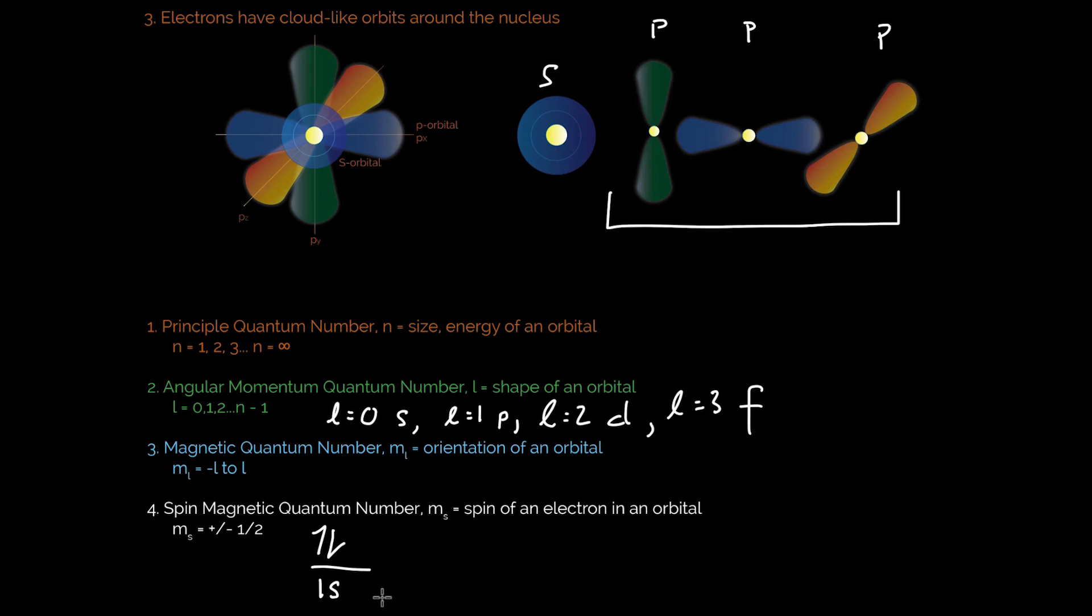And this quantum number, there's no way to really determine what it is without doing some heavy-duty math or some observation. So all you really need to know is that the possible values for m sub s are going to be plus one half or minus one half. For now, both of those are proper responses.